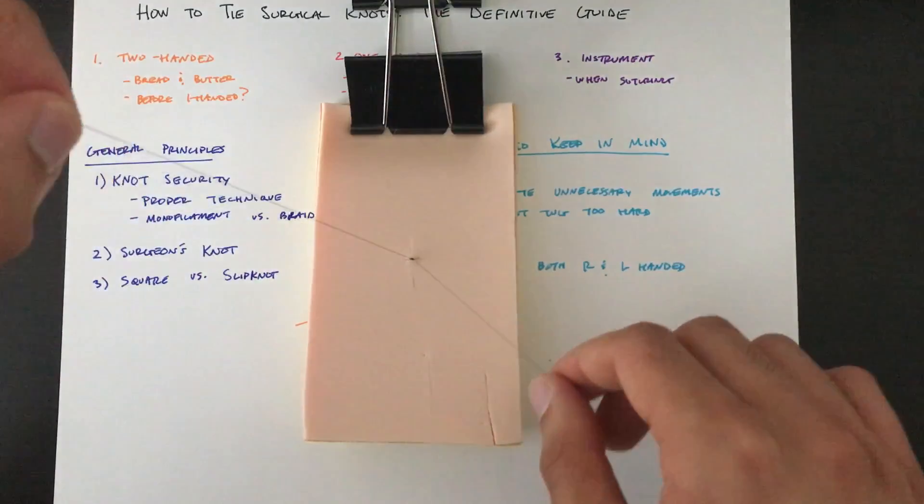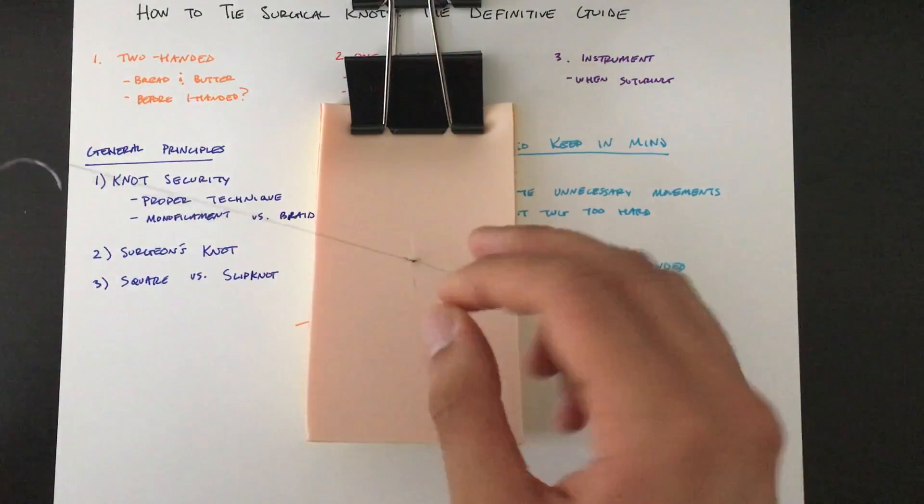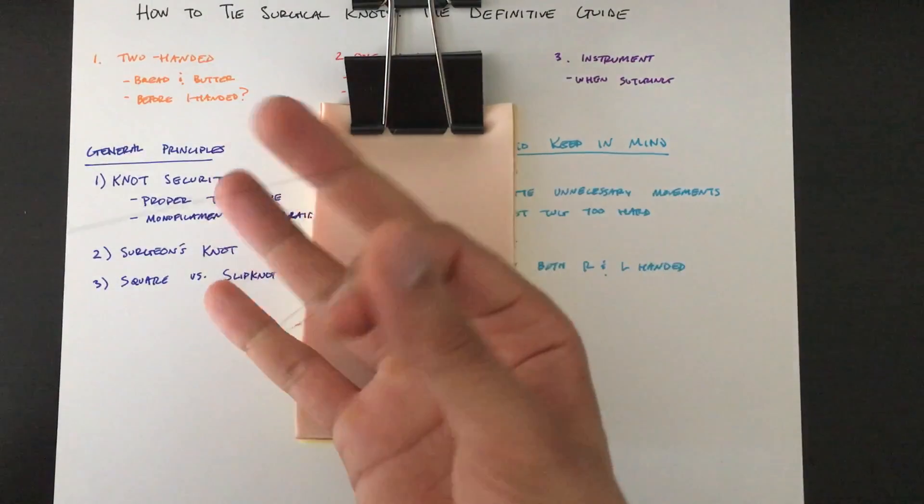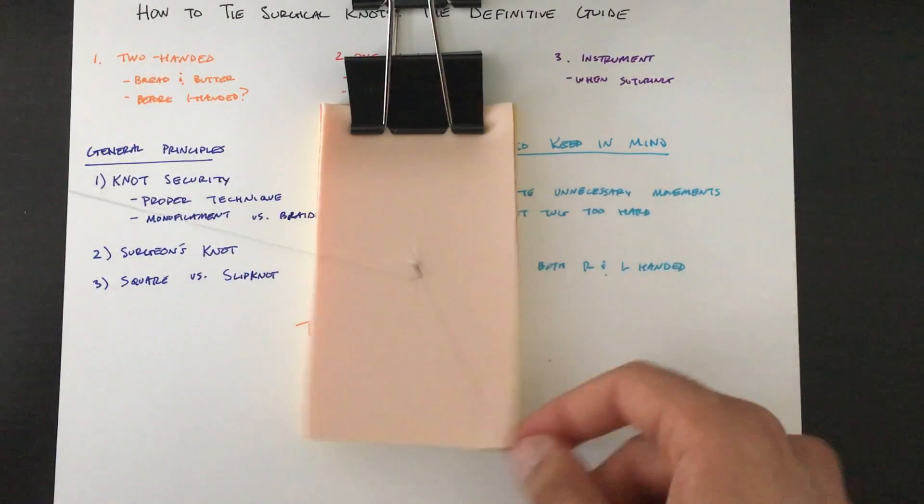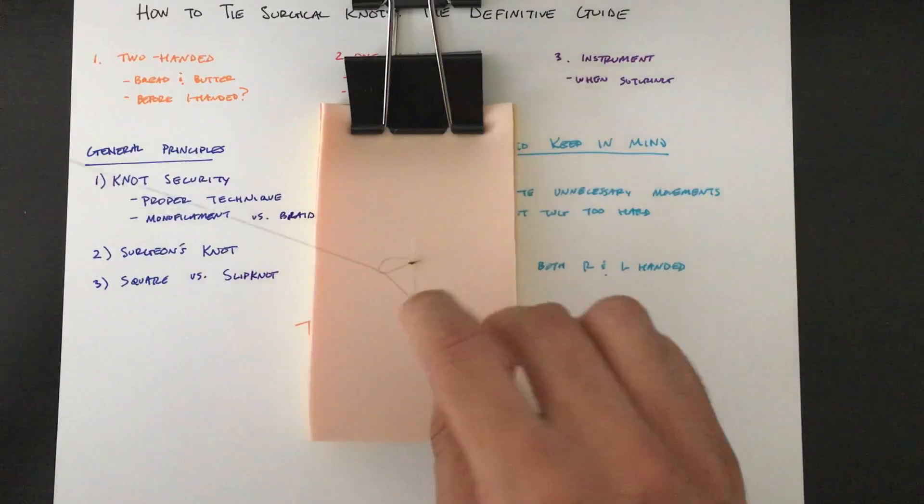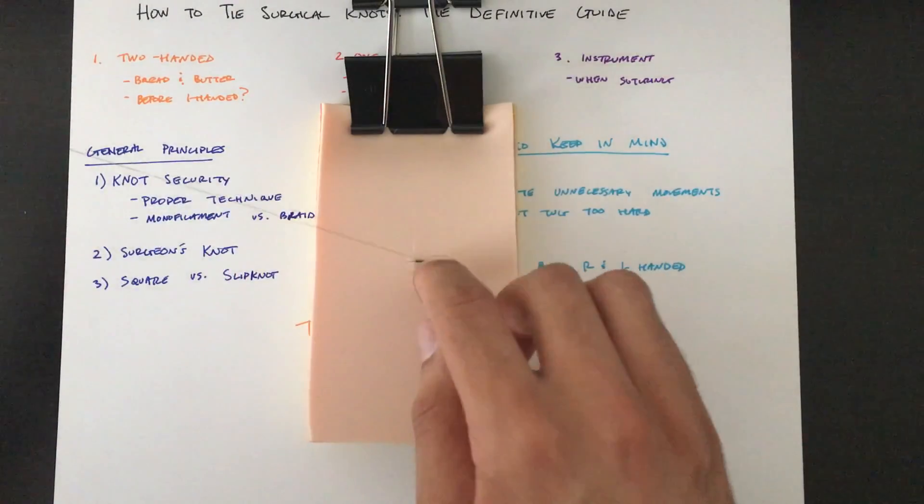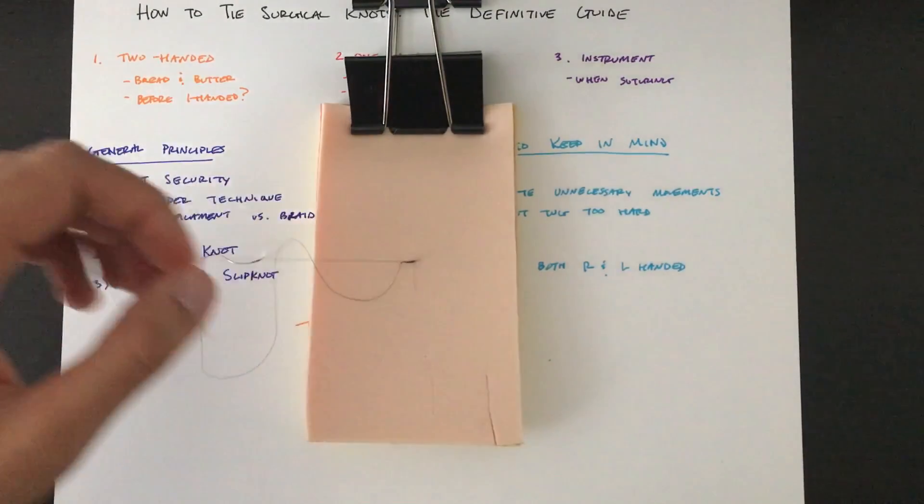As I'm going to demonstrate doing one-handed again, you want to keep your post relatively still and constant. And there you go.